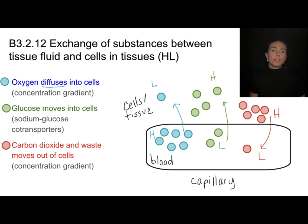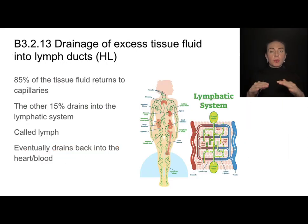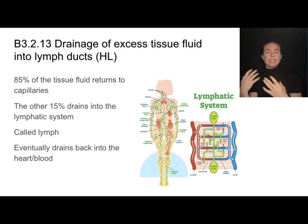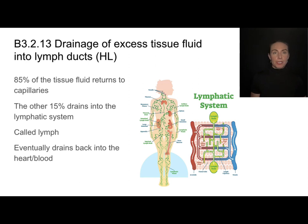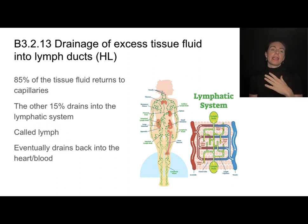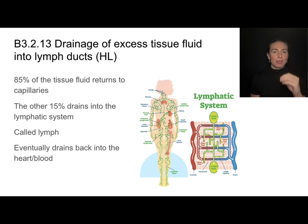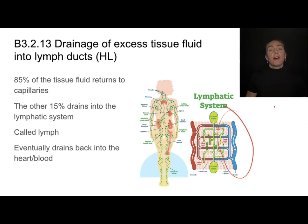Two important themes: we need to understand which materials are moving into our cells and which are moving out, and we need to understand the importance of concentration gradients in maintaining that movement. Out of all the fluid forced out of the capillaries, about 85% returns to the capillary network and then through the veins. But about 15% of that fluid drains not into our cardiovascular system but into our lymphatic system — and that fluid is then called lymph. Eventually it drains back into our circulatory system, so we do have an alternative transport mechanism beyond just arteries, veins, and capillaries.